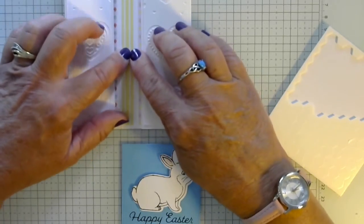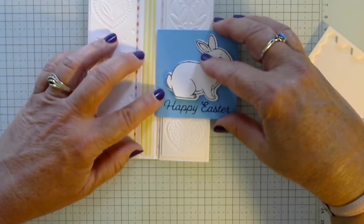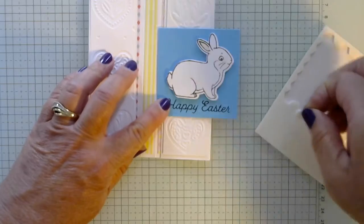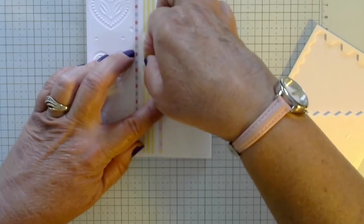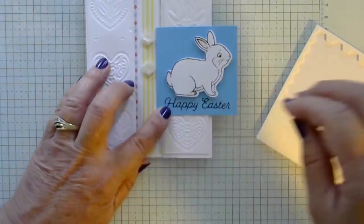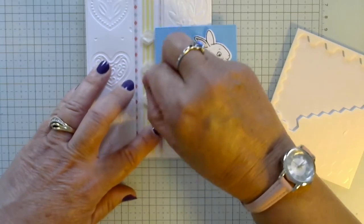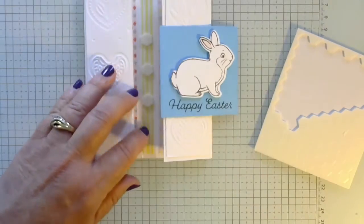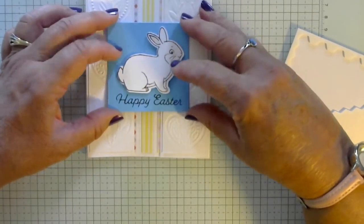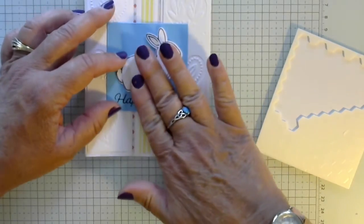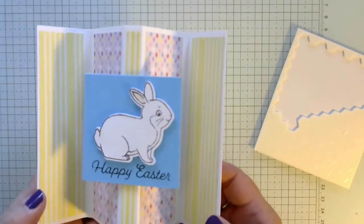Now we're going to put him right in here with some dimensionals as well. So I'm just going to lay him here so that I can kind of see where I want my dimensionals. And you want them to be sides straight. And I think three of them should do it. Then we're going to center him. Actually, these hearts make it pretty easy to center him there. So there is our Happy Easter card.